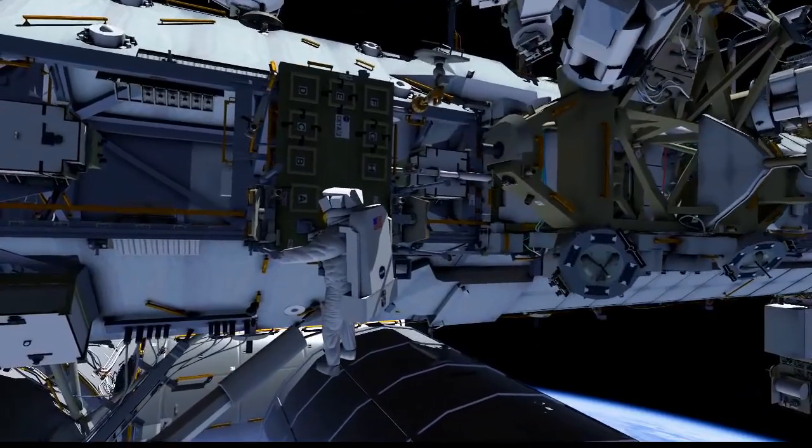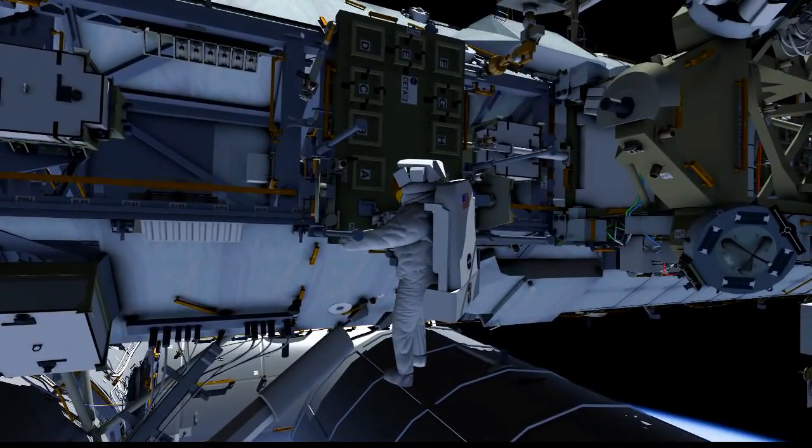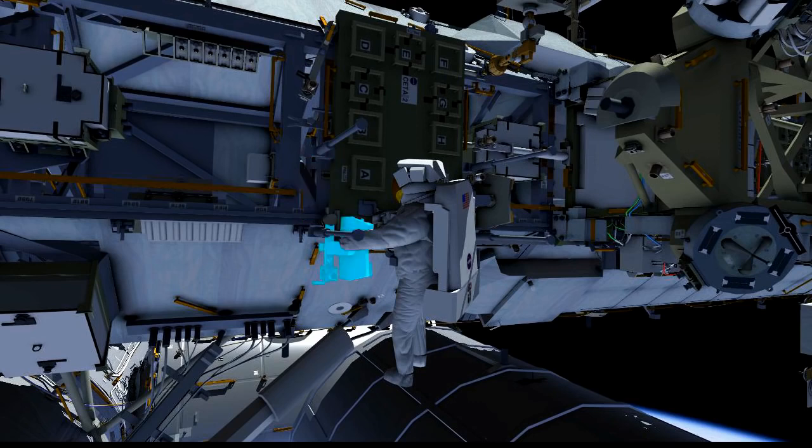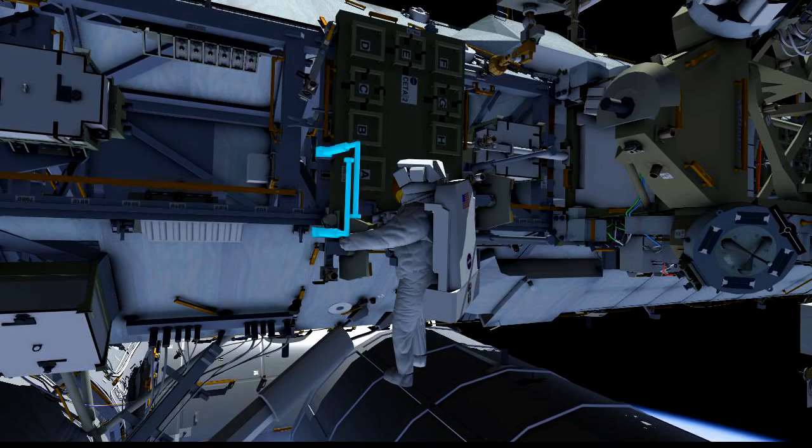Meanwhile, we'll have Scott head over to the starboard CETA cart. He'll be reconfiguring this CETA cart so that we can take the mobile transporter to work site one and still rotate the SARJ. He's going to fold over two brake handles and secure those with a tether.